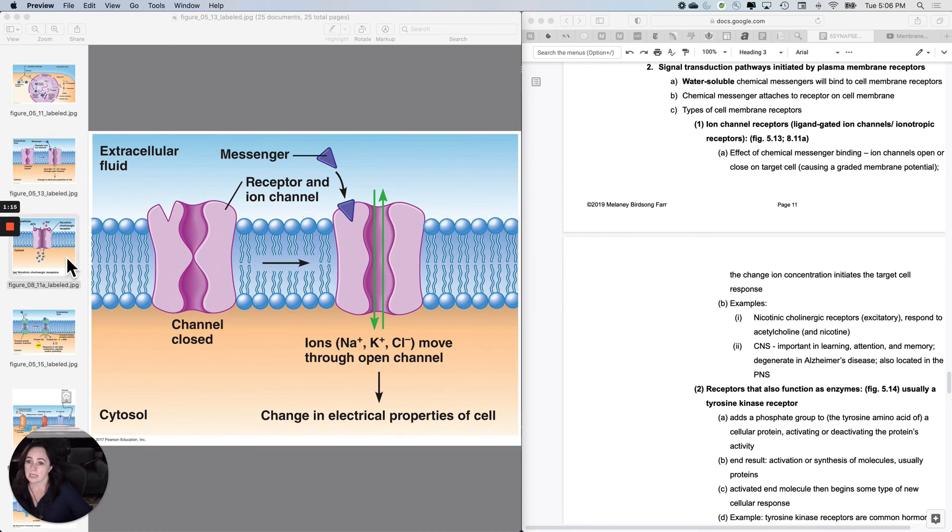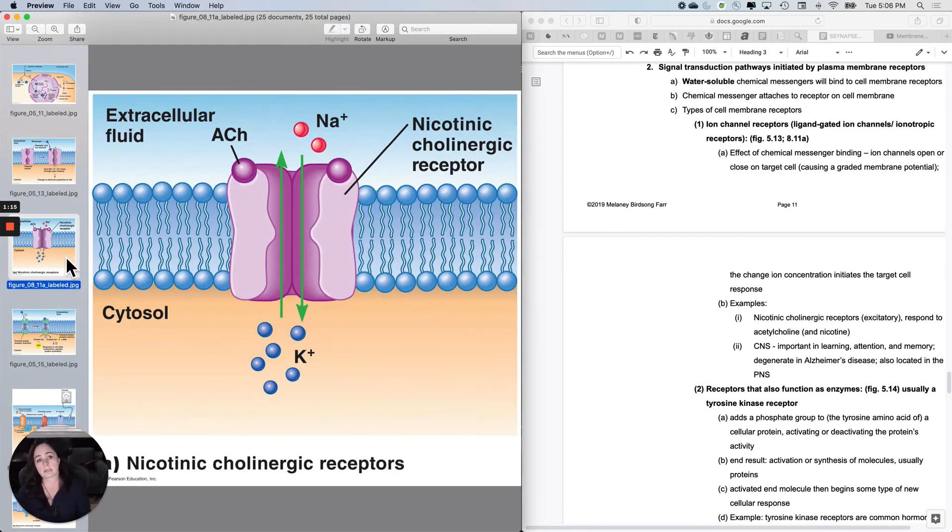And some examples that we have run into, whether you know it or not, is that nicotinic cholinergic receptors are the really fast ones that bind to acetylcholine and also nicotine. They're almost always excitatory. And here's one right here.